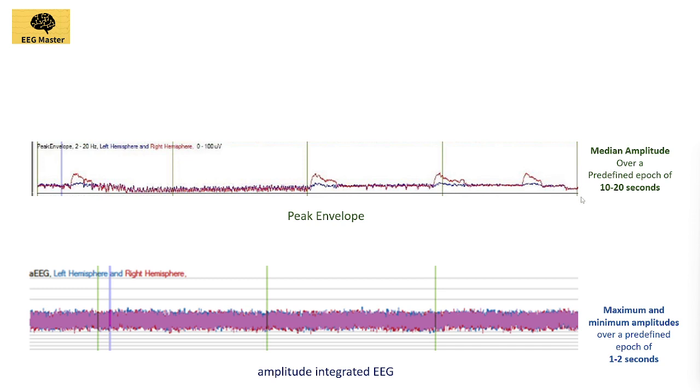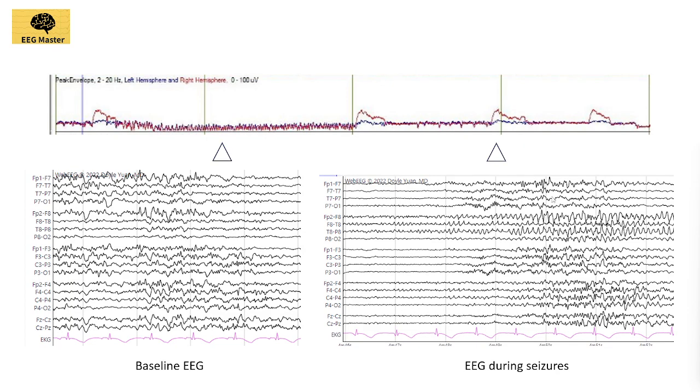For the same reason, envelope trend loses its sensitivity for smaller seizures, especially seizures that are smaller than the duration of the predefined epoch and very slowly evolving seizures. However, it can pick up longer seizures with a ramp-up and ramp-down in amplitude as seen in this picture.